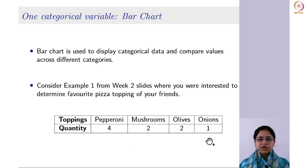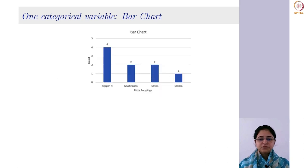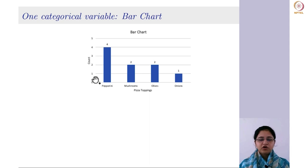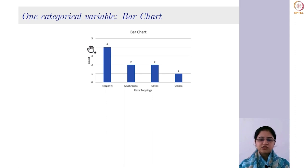If you want to make a bar chart based on this data set, on the x-axis you will mark pepperoni, mushrooms, olives, and onions, and on the y-axis you will mark the counts. You will draw a bar at each category and the size of the bar corresponds to the number of counts. For pepperoni the count was 4, for mushrooms and olives it was 2, so the height of the bar is 2, and for onions it is 1.